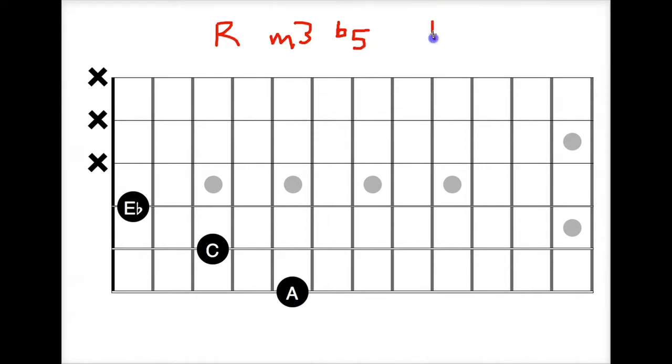So when we're talking about our intervals, a perfect fifth, if we flat a perfect fifth, it becomes a flatted five, right? So that's where your diminished term comes from.